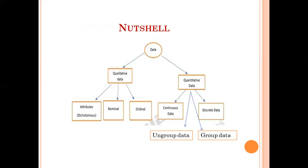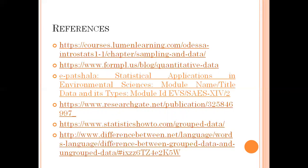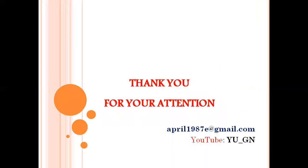So in summary, in this presentation we talked about data types: qualitative and quantitative data. Under qualitative we discussed attributes, nominal, and ordinal. Under quantitative we discussed continuous and discrete data. Finally we talked about grouped and ungrouped data. Thank you so much for your attention, and I hope this video helps you understand the different types of data in statistics.